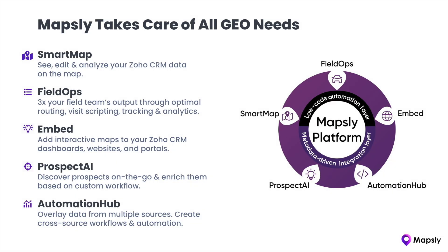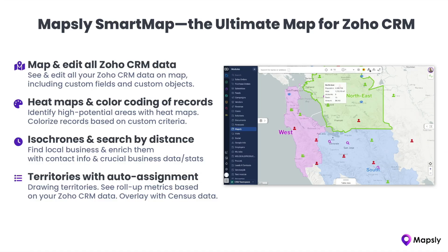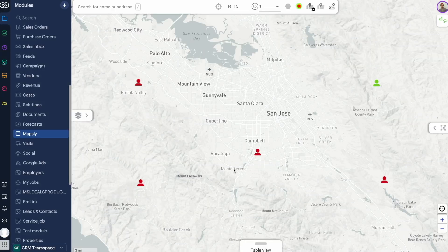Mapsly is a map and field sales enablement platform for Zoho CRM that addresses all client needs related to geography. SmartMap shows all Zoho CRM data on the map, including custom fields and custom objects without any custom development or integration, and allows you to analyze data using a wide range of tools. Let's take a look at how Mapsly's SmartMap can help a sales manager analyze Zoho CRM data to make smarter business decisions.